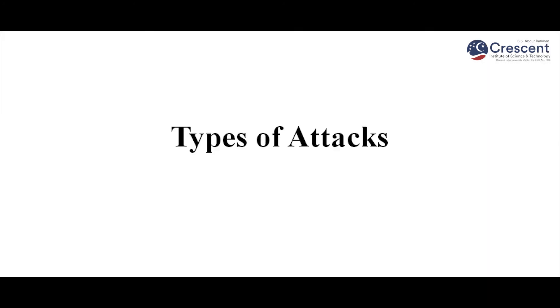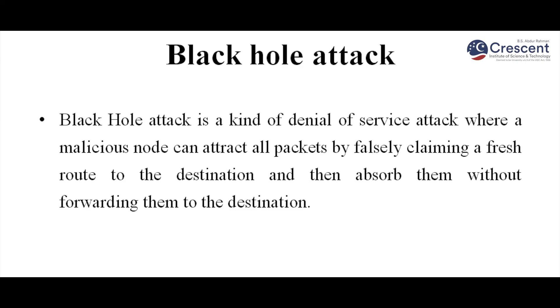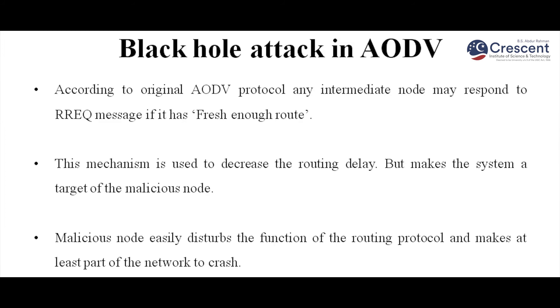Now we will move to the types of attacks. There are many important types of attacks in AODV because, even though AODV is a very good protocol, security issues were not concentrated on in its original working principle. One such attack is the black hole attack — a kind of denial-of-service attack where a malicious node attracts all packets by falsely claiming a fresh route to the destination and then absorbs them without forwarding to the destination. According to the original AODV protocol, any intermediate node may respond to a route request if it has a fresh enough route — a mechanism used to decrease routing delay. But the attacker utilizes this property.